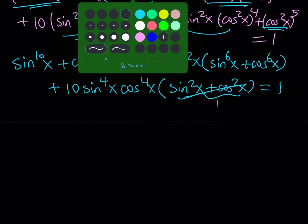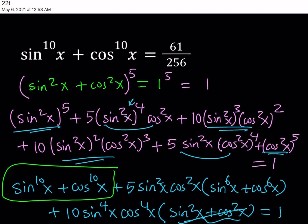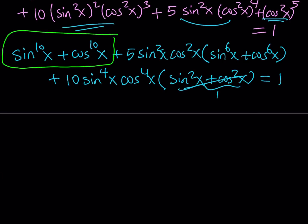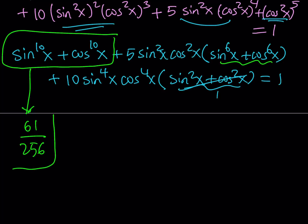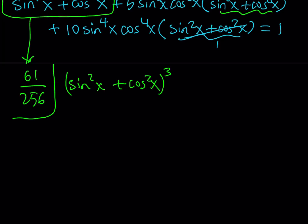Now let's focus on what we're looking for. We're given the sum of the 10th powers as 61 over 256. I also need the sum of the 6th powers. So let's take sine squared x plus cosine squared x and cube it, because that's going to give me the sum of the 6th powers. But let's cube it a little differently.